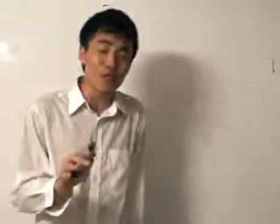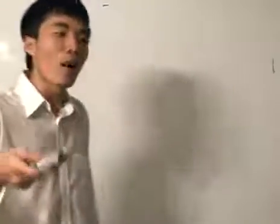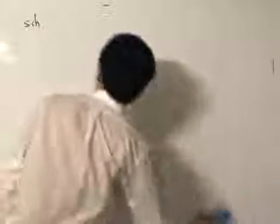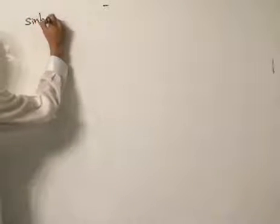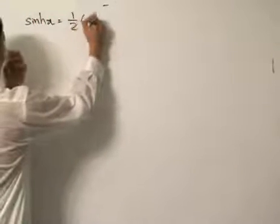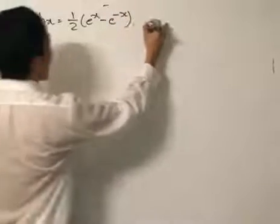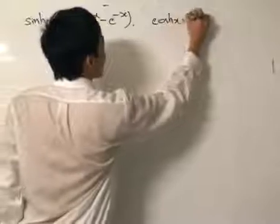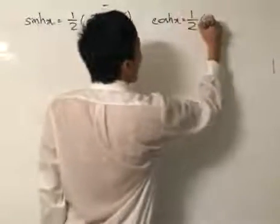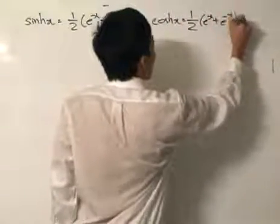Hyperbolic functions, though they seem to have a trigonometric form, are actually expressions of the Eulerian number E. The two big definitions are: hyperbolic sine, written as sinh (sin with an H), which equals one-half times (e to the power of x minus e to the power of minus x). And the hyperbolic cosine, written as cosh (cos with an H), which equals one-half times (e to the power of x plus e to the power of minus x).